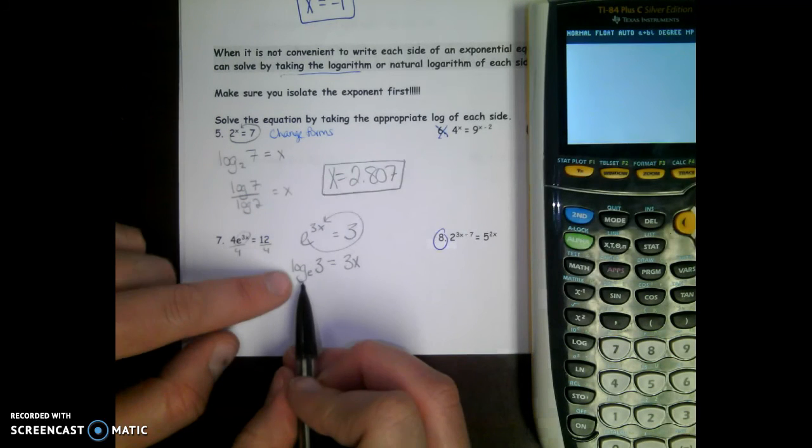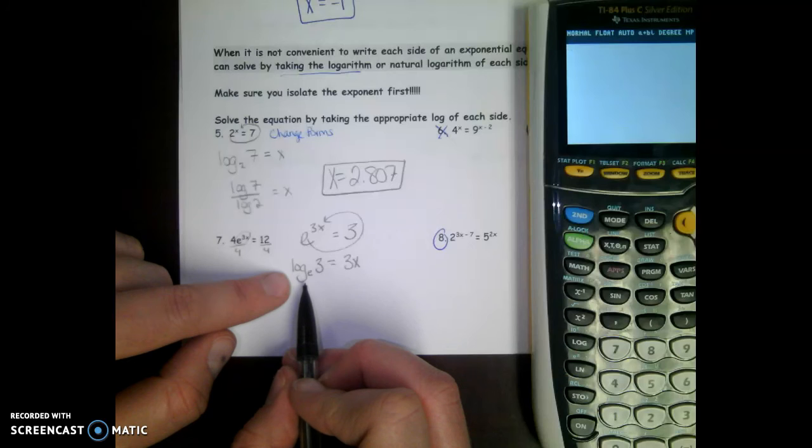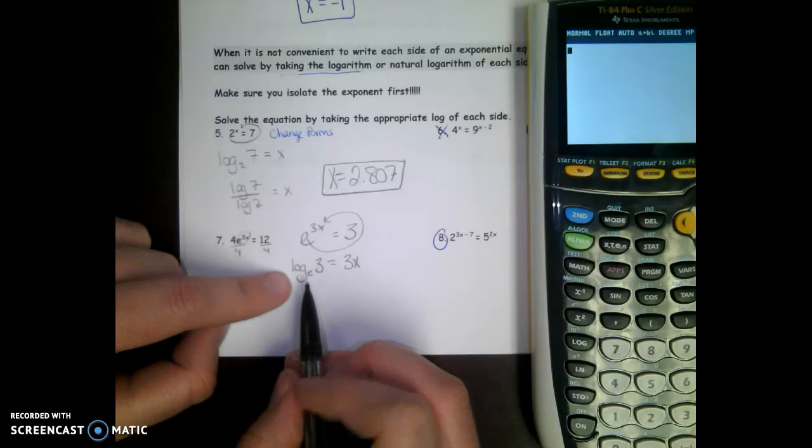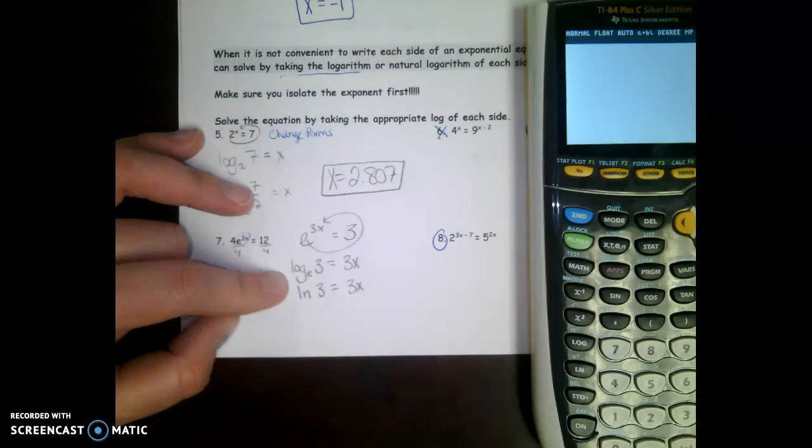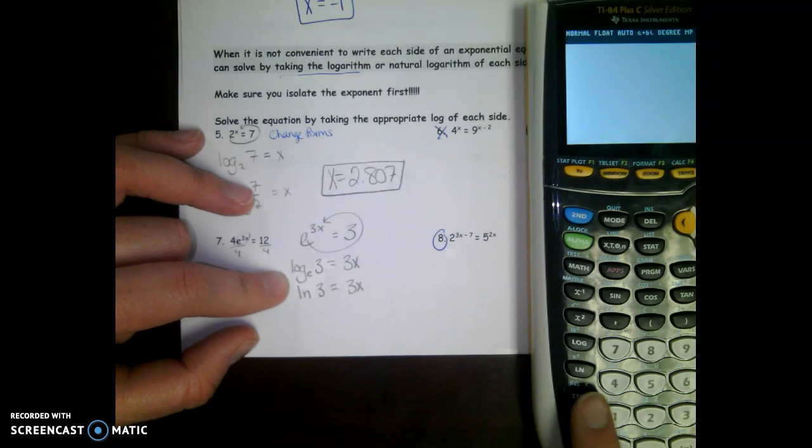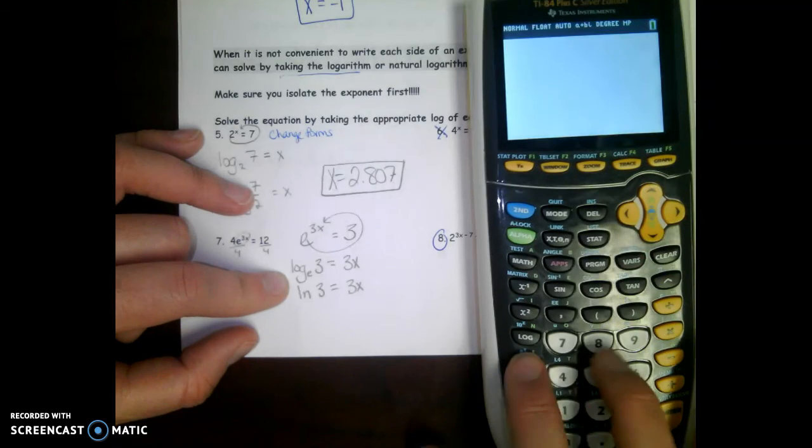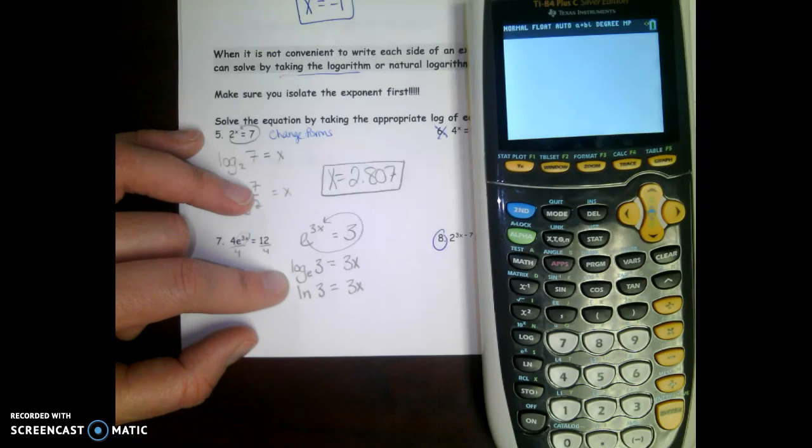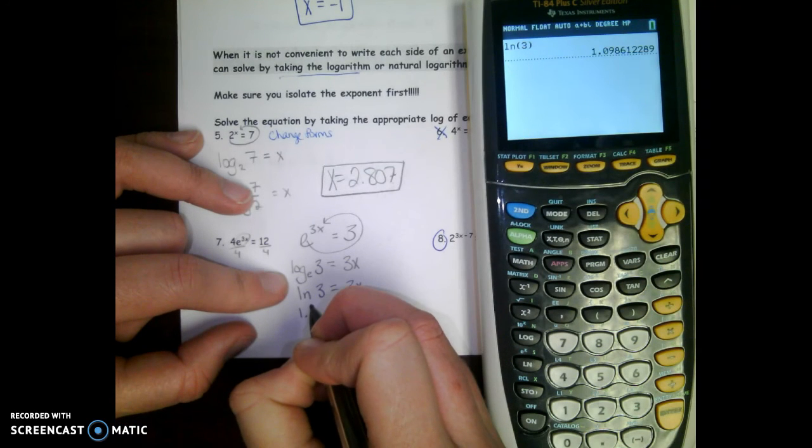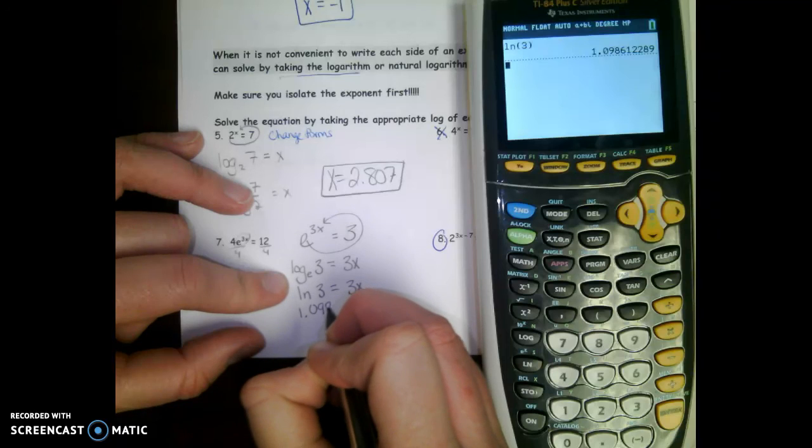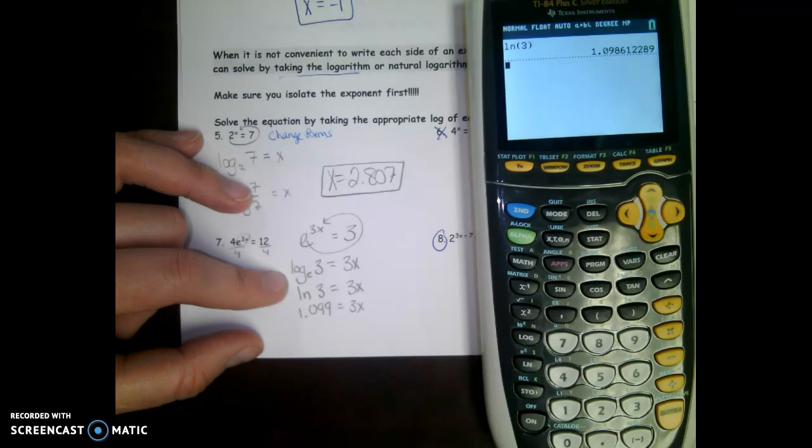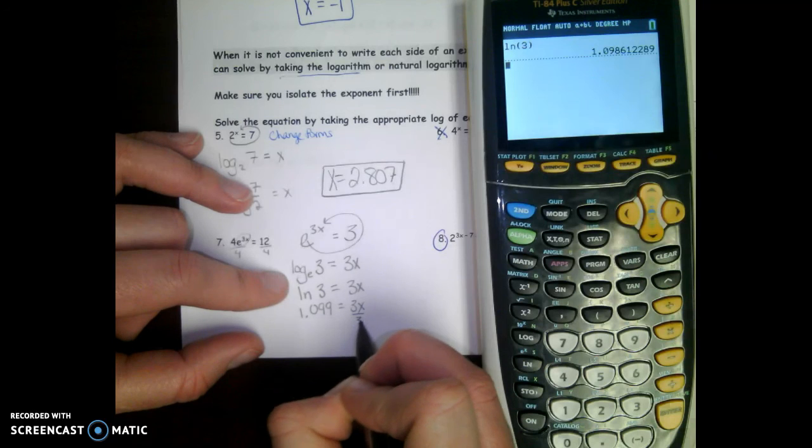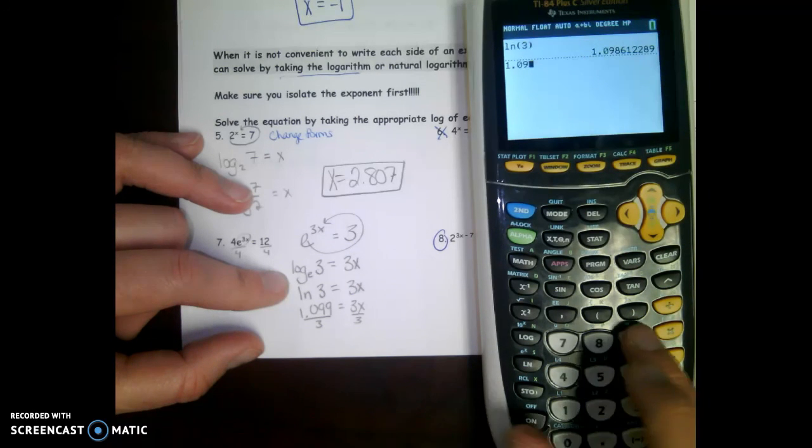Before you try to punch log base e in your calculator, what is log base e the same as? Natural log, ln. That's ln of 3, which will actually make less work for you because now it's just one button in your calculator. ln of 3 is 1.099. And then final step to get x by itself, divide both sides by 3.